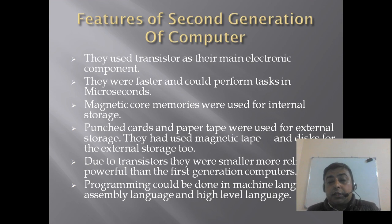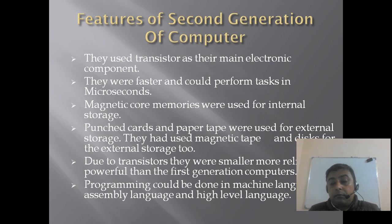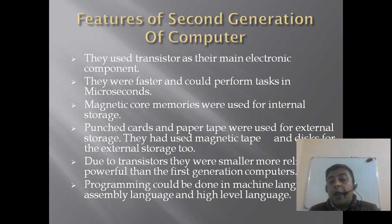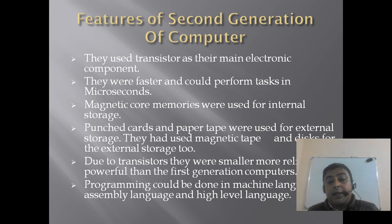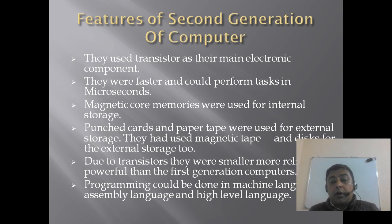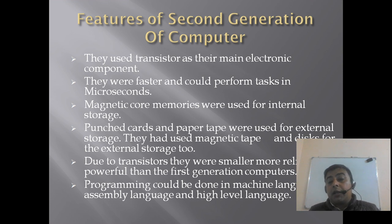Features of second generation of computers: they use transistors as their main electronic component, replacing vacuum tubes. They were faster and could perform tasks in microseconds, which is 10 to the power minus 6 of a second. Many core memories were used for internal storage. Punch cards and paper tapes, as well as magnetic tape and disk, were used for external storage.